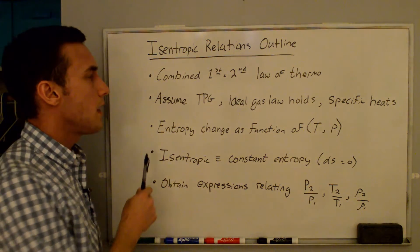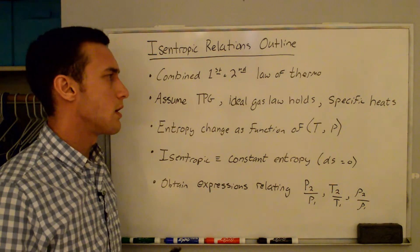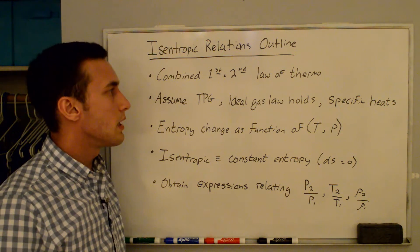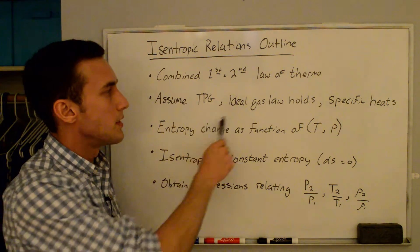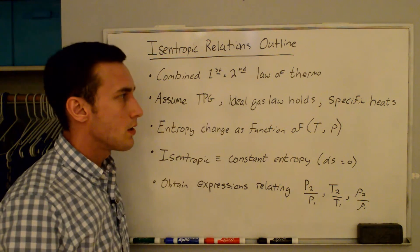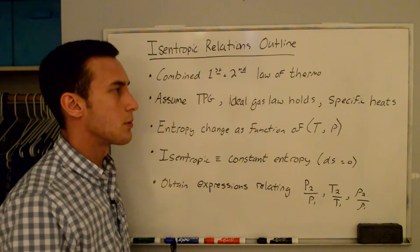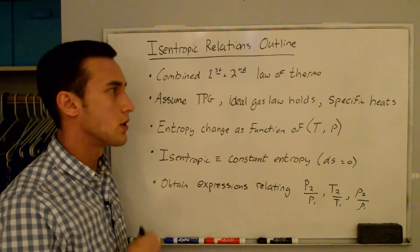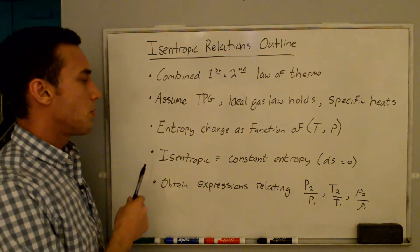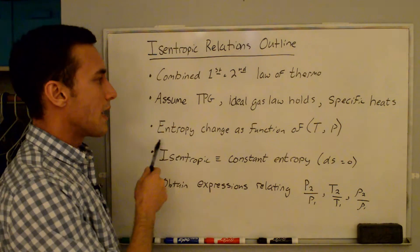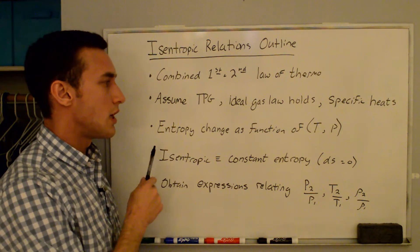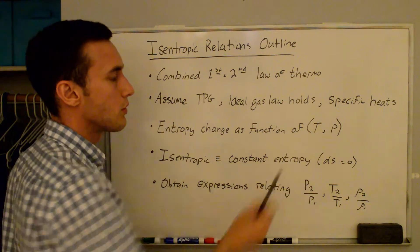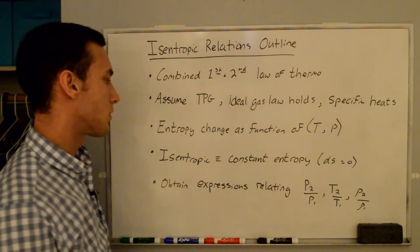We're going to assume a thermally perfect gas where the intermolecular forces are negligible between the molecules. This means that the ideal gas law holds and that we have the expressions for the specific heats — I also have a video on that which I'll link to. Then we will get an expression for the entropy change as a function of temperature and pressure, as a function of these two state variables.